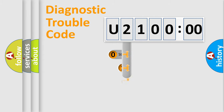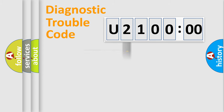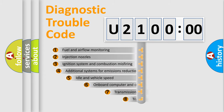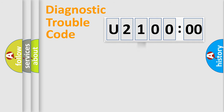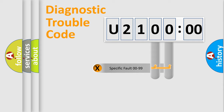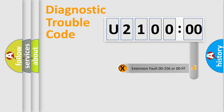This distribution is defined in the first character of the code. If the second character is expressed as zero, it is a standardized error. In the case of numbers 1, 2, or 3, it is a more specific expression of a car-specific error. The third character specifies a subset of errors. This distribution is valid only for the standardized DTC code. Only the last two characters define the specific fault of the group.